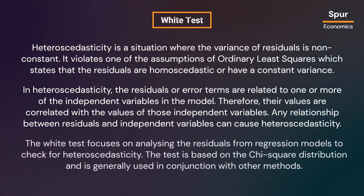The White test focuses on analyzing the residuals from regression models to check for heteroscedasticity. The test is based on the chi-square distribution and is generally used in conjunction with other methods such as graphical analysis.